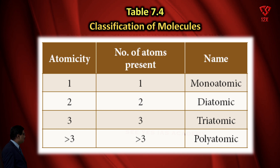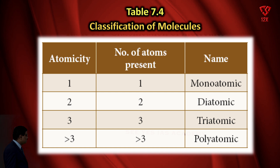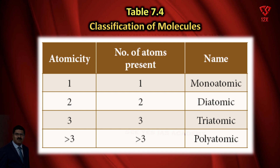Table 7.4 - Classification of Molecules by Atomicity: Atomicity 1, number of atoms present: 1, name: mono-atomic. Atomicity 2, number of atoms present: 2, name: di-atomic. Atomicity 3, number of atoms present: 3, name: tri-atomic. Atomicity more than 3, number of atoms present: more than 3, name: poly-atomic molecule.